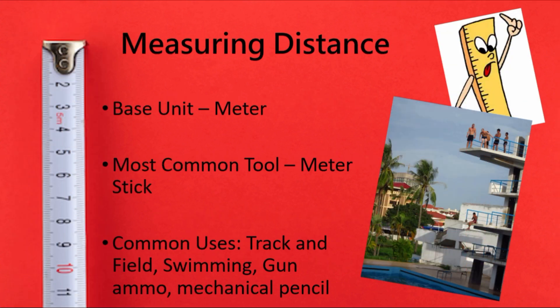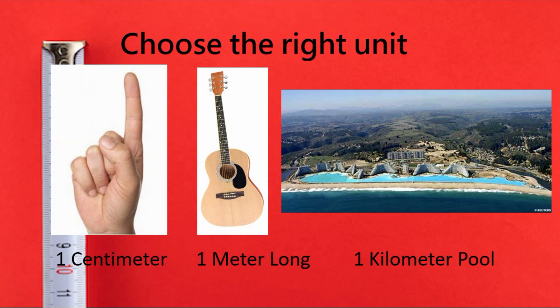In measuring distance in the metric system, the base unit is the meter. The most common tool we might use is a meter stick, although they make tape measures and many more measuring devices. Common places you might see metric units include track and field, like the 100-meter or 200-meter race, in swimming, in gun ammo such as a 9-millimeter, and even in mechanical pencils and their lead — for example, 0.5-millimeter lead. A centimeter is typically about the width of a finger. A meter is roughly the length of a full guitar including the neck. A kilometer is kind of like a small version of a mile — you can see in the picture of a kilometer pool how small the giant resort buildings look in comparison.